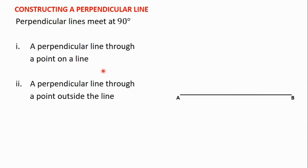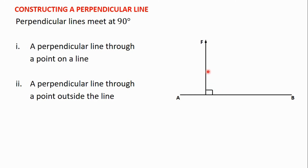For the second condition, we will learn how to draw a perpendicular line to another line through a point outside the line. So we have line AB and a point F which is outside line AB. We will learn how to draw a line through point F to meet AB such that it and line AB will be perpendicular to each other. We will cover the first condition in this video and the second one in the next video.